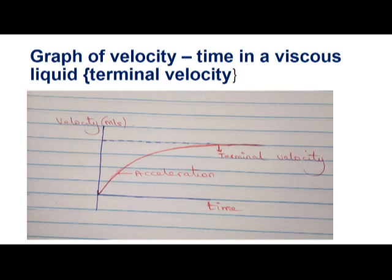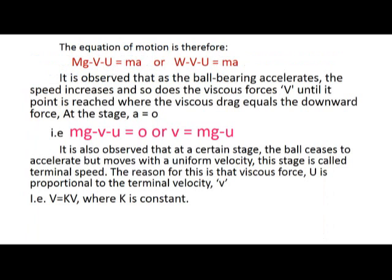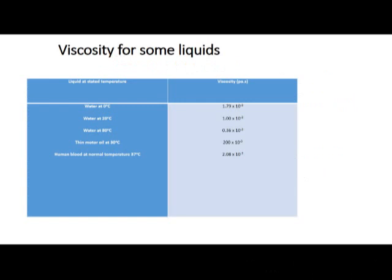Terminal velocity or terminal speed is defined as the velocity or speed at which a particle or object moves with uniform velocity. Master the equation: weight W = mg equals the viscous force V at terminal velocity; or more completely, weight minus V minus U equals ma, where a is the acceleration of the ball bearing, g is acceleration due to gravity (10 or 9.8 m/s²).